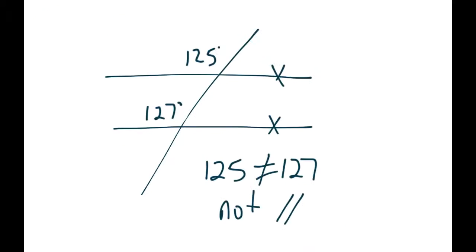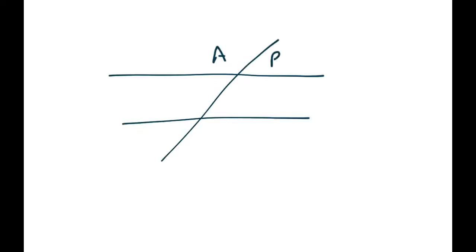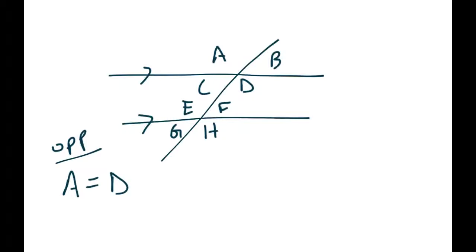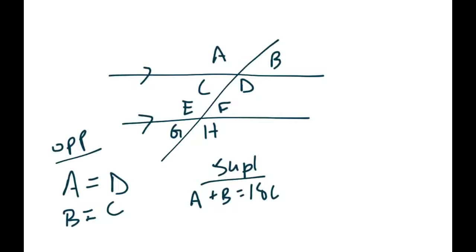Let's do a couple of examples. Assuming these lines are parallel, which angle is opposite to A? Opposite of A would be D — those are the same. Other opposite pairs are B and C, E and F, G and H, and G and F. For supplementary angles: A plus B equals 180 degrees — that's supplementary. We could also do A and C, C and D, E and F, or E and G — there are lots of different choices.